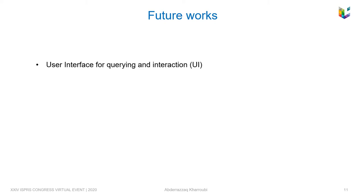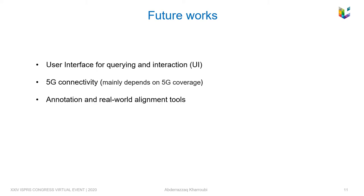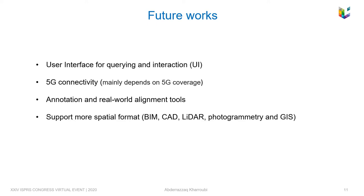We will study the effect of 5G on its improvement and minimization, with higher bandwidth and lower network delay, which can certainly improve data transmission on mobile networks. We will also focus on annotation and real-world alignment tools, support more spatial formats like BIM, CAD, LiDAR, Photogrammetry, and GIS, and also measurement and alignment tools.